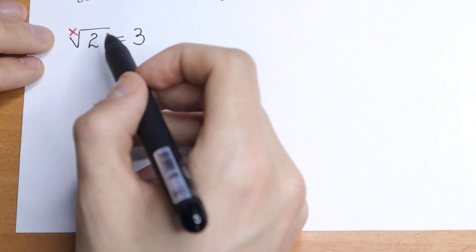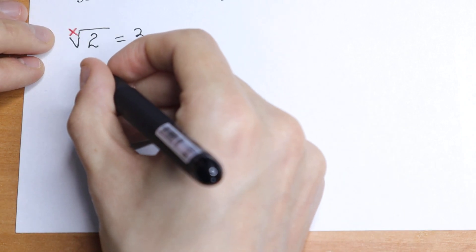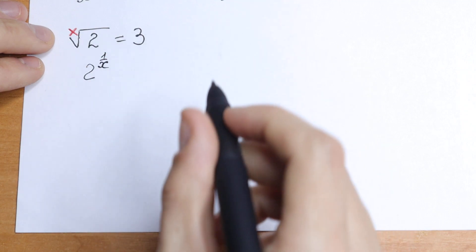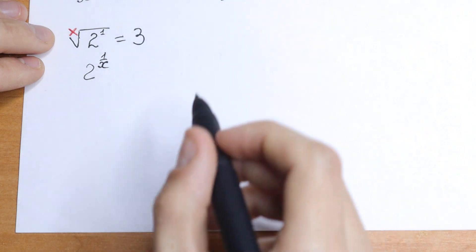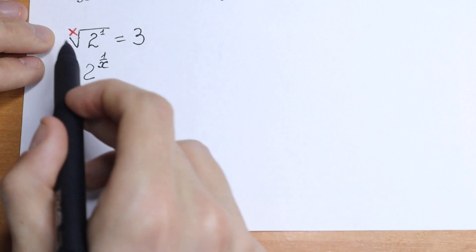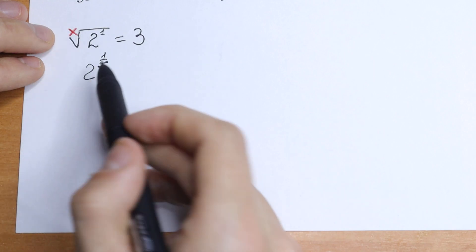We can write this x√2 in another way. So we can write this x√2 as 2 to the power 1/x. Of course we can do this, because right here we have 1, and if you have a situation like that, this power goes to our denominator.